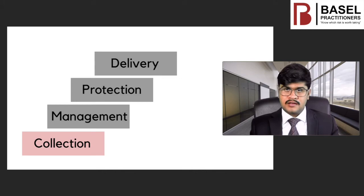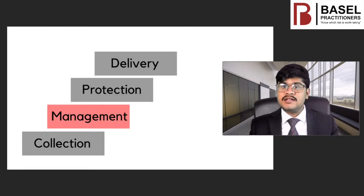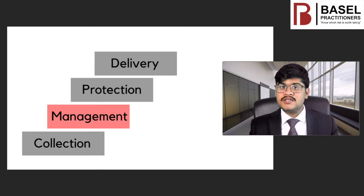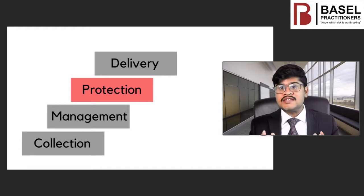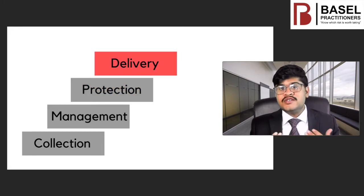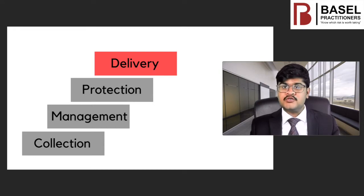First, banks need to collect the data, segregate it, and store it wherever required. Then they need to manage the data by understanding who owns the data, how it is used, and who is accountable for maintaining it. These responsibilities must be documented to maintain proper data management. Then they need to protect the data by identifying and documenting where the data is stored, classifying data based on sensitivity, and defining the steps that need to take place in case of a data breach. Finally, they need to deliver the data to users or extract it from the systems and convert it into information banks can use to make decisions.